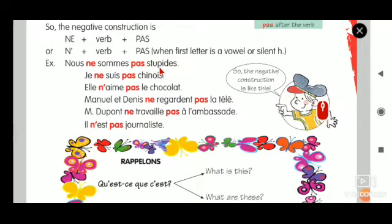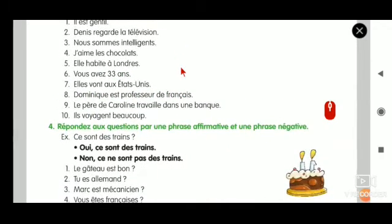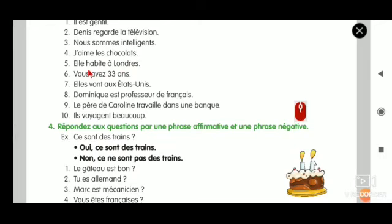The fourth one is J'aime le chocolat. Now we have to see the verb. The verb starts with a vowel. So j'apostrophe becomes je because a new word ne is going to enter. But we cannot write ne here because the verb starts with a vowel. So: je, n'apostrophe - Je n'aime. And after the verb we write pas. Je n'aime pas les chocolats.